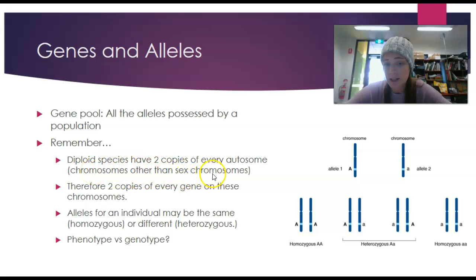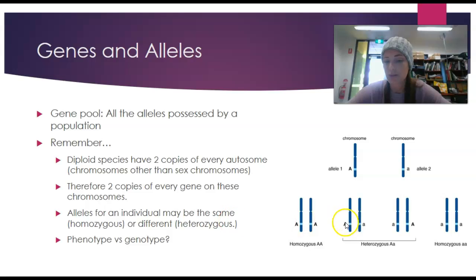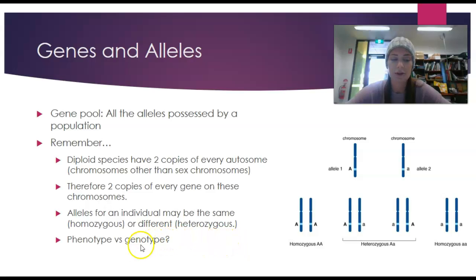Diploid species have two copies of every chromosome. Because you've got two copies, there's the potential for individuals to be homozygous or heterozygous. If you are homozygous, you've got two copies of the same allele. If you are heterozygous, you've got two different alleles of that gene.